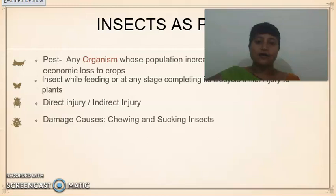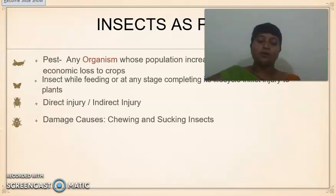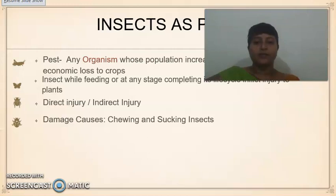With a basic understanding of what insects are, we will look into the definition of a pest. A pest is any organism whose population increases to an extent that it causes some economic loss to the farmer. When I say any organism, it can be an insect or a non-insect — like a millipede, a crab, a snail, a bird, or any mammal. Here we are particularly interested in how insects act as pests.